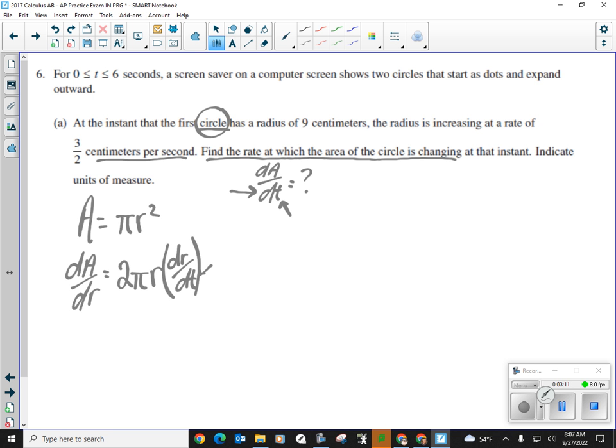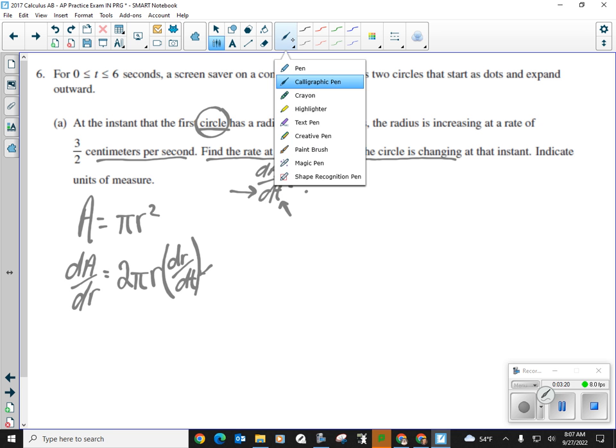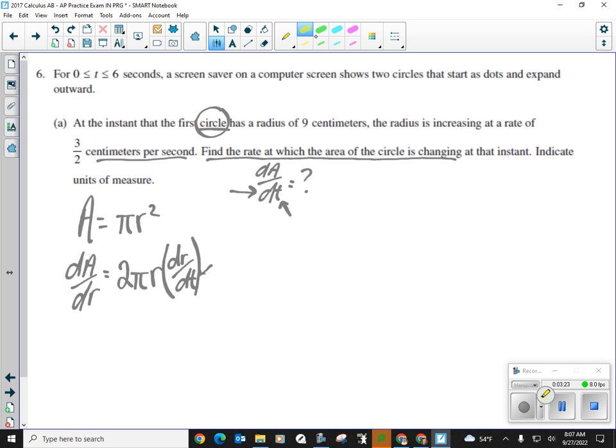But any time we take the derivative of the variable, it's like implicit differentiation. I need to put dr with respect to time. There's my time that we have here. And that represents the rate of change of the radius. So now I'm going to take this equation. I'm going to fill in what I know. What do I know? At the instant, the first circle has a radius of 9 centimeters. So that's our radius, 9. And the radius is increasing at a rate of 3 halves. An increasing radius is a change in rate of the radius. That's going to go right here, our 3 halves. Actually, those are the only two variables I have.